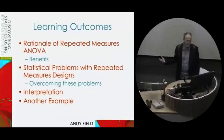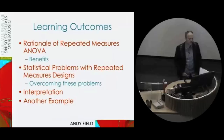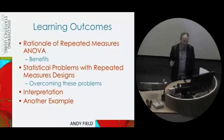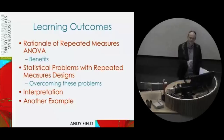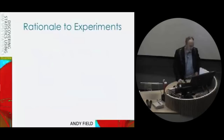So what are our learning outcomes today? Hopefully by the end of today and by the end of your practical class, you'll know something about repeated measures designs and the benefits of them. We're going to have a look at one particular statistical problem that repeated measures designs throw up — and I use the word 'throw up' advisedly in the context of the example. Then we'll look at two examples: a one-way repeated measures ANOVA and also a factorial repeated measures ANOVA, just to give you a flavour of how everything's pretty similar to what we've done before.